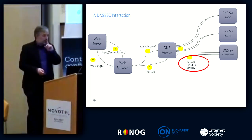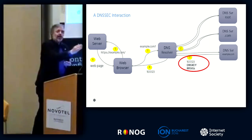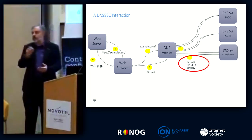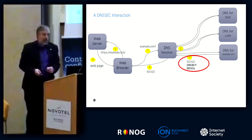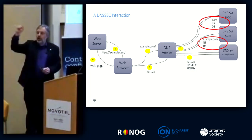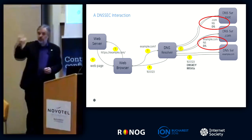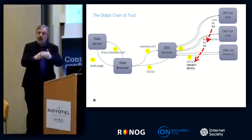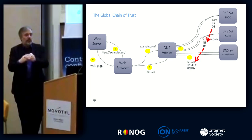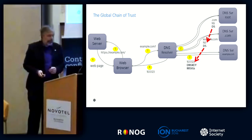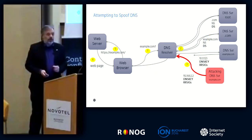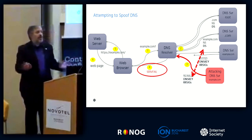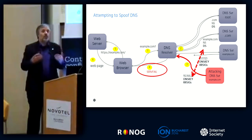When that signed information gets passed back, it has these additional records used for checking. You might ask: can't an attacker just spoof the signature? What's happened in DNSSEC is a chain of trust — there are additional records inserted at the parent zones that tie it all together. Not only is my signature there, but it can check that this is the right key for example.com. If an attacker tries to go in, the validating resolver will say sorry, that doesn't work, and send back a SERVFAIL, preventing you from getting to that website.